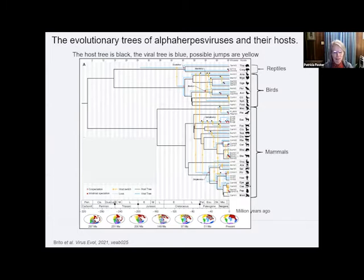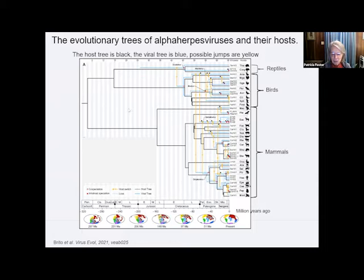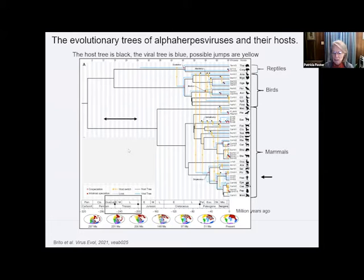Scientists can correlate the viral family tree with host evolution. This complex chart shows the family tree of the animal kingdom in black and the family tree of the viruses in blue, on a scale going back millions of years. Yellow lines represent host jumps that happened in the past. The oldest lines go back to a turtle herpes virus 200 million years ago — meaning the ancient ancestor of the chickenpox virus existed 200 million years ago, at the time of the dinosaurs. So it coexisted with the dinosaurs.